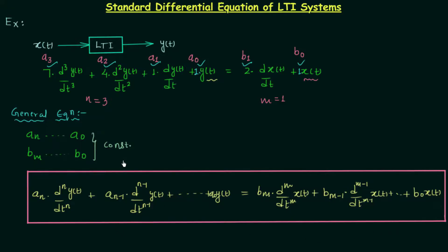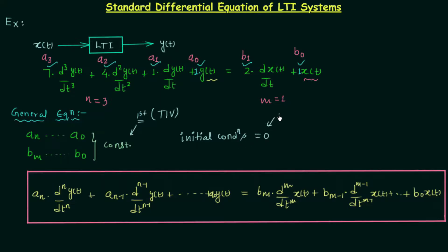There are two conditions along with this general equation. The first condition is that all the coefficients must be constant — this ensures the system is time invariant. The second condition is that all the initial conditions should be equal to zero. When this holds, we can say the given LTI system is linear. So for linearity this second condition is important, and for time invariancy the first condition is important.